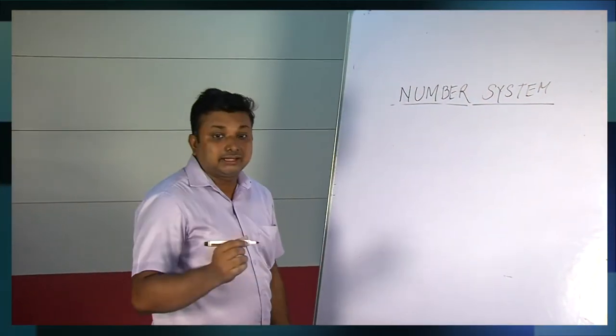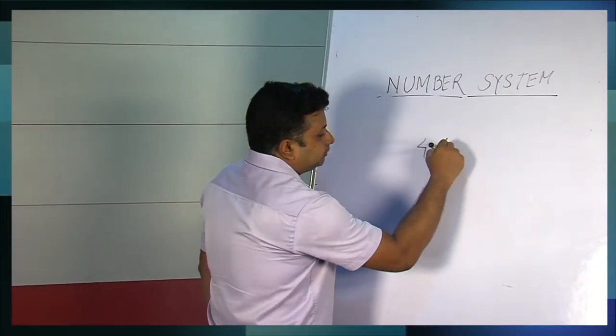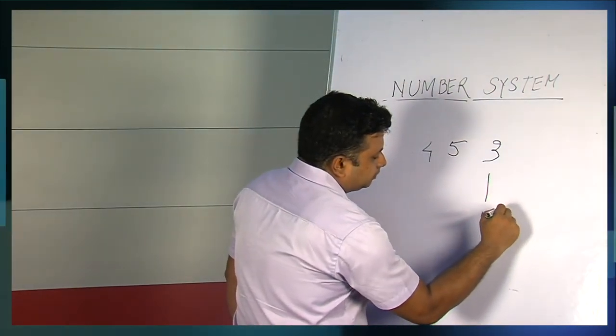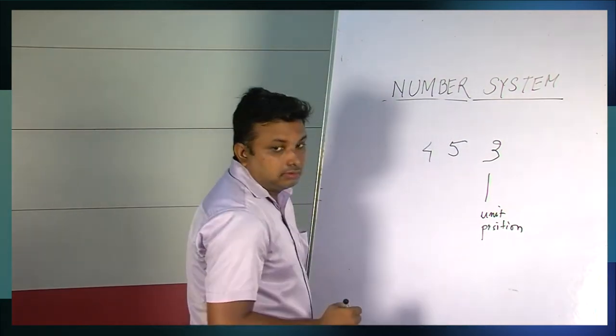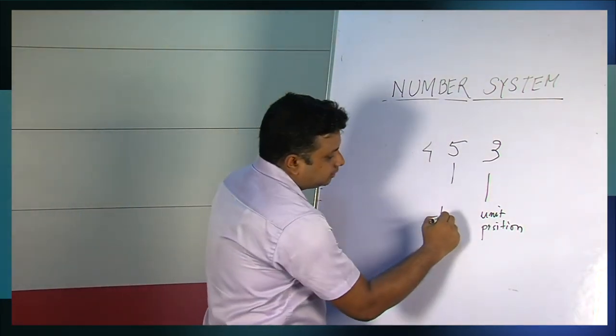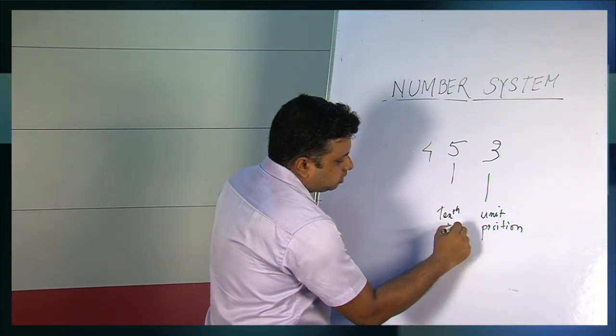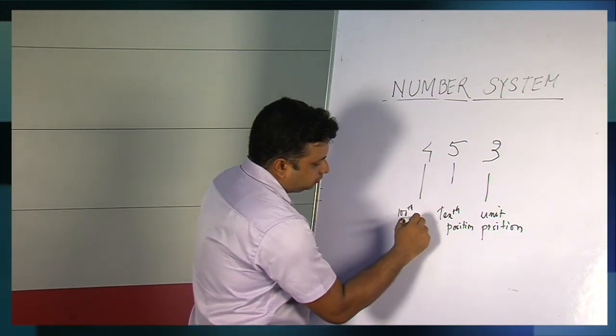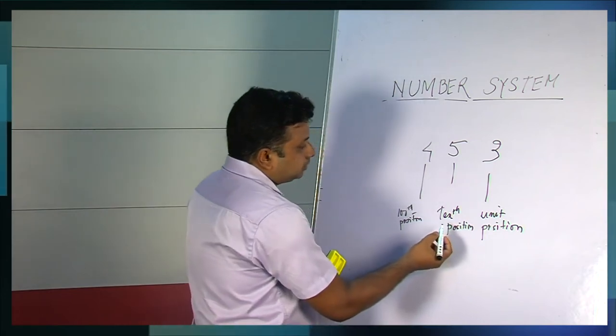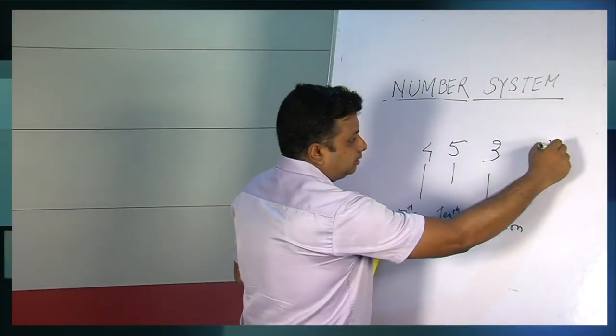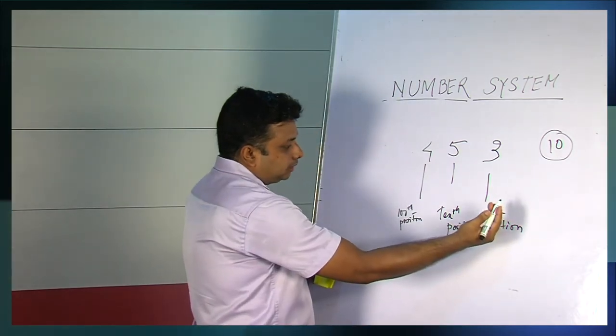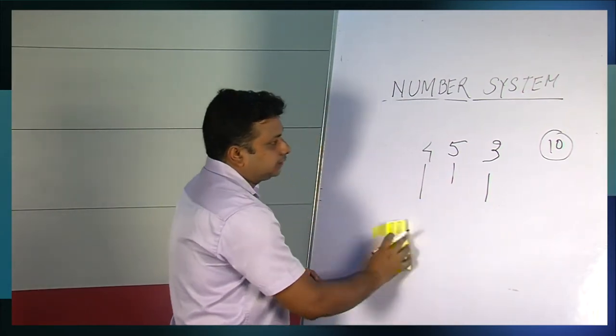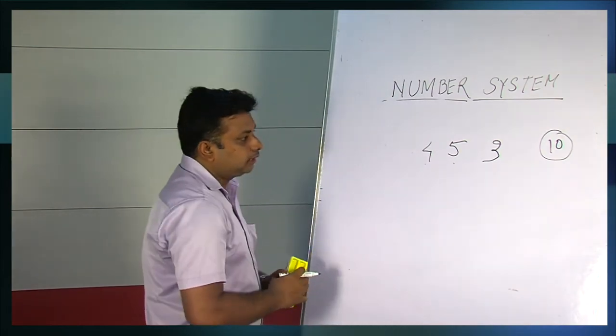For better understanding, let us take an example. Suppose it is a decimal number 453. So what we know, this first one is known as unit position. Second one is the 10th position and this third one is the 100th position. How does this come? Because the base of this decimal system is 10, this is the base. So when we come towards left, it increases by a proportion of 10.